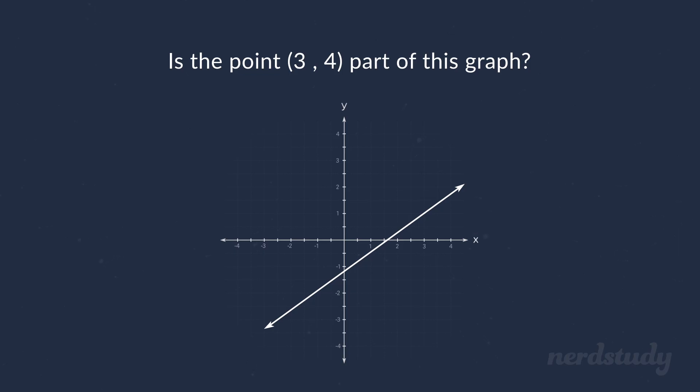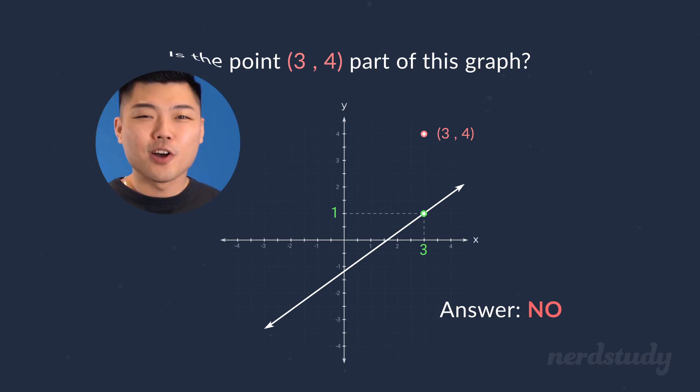Lastly, let's see if we can do one more question together. Is the point a part of this line graph? Well, the answer to this is no. Since when we look at the point in which x is equal to 3, we can see that the y value is equal to 1, making (3, 4) a point that is above the graph.